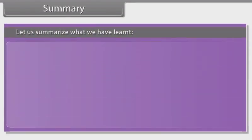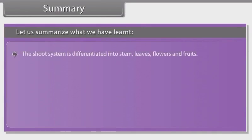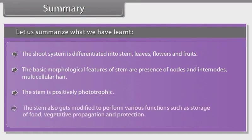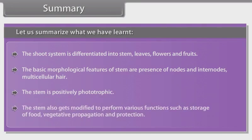Let us summarize what we have learned. The shoot system is differentiated into stem, leaves, flowers and fruits. The basic morphological features of stem are the presence of nodes and internodes and multicellular hair. The stem is positively phototropic. The stem also gets modified to perform various functions such as storage of food, vegetative propagation, and protection.